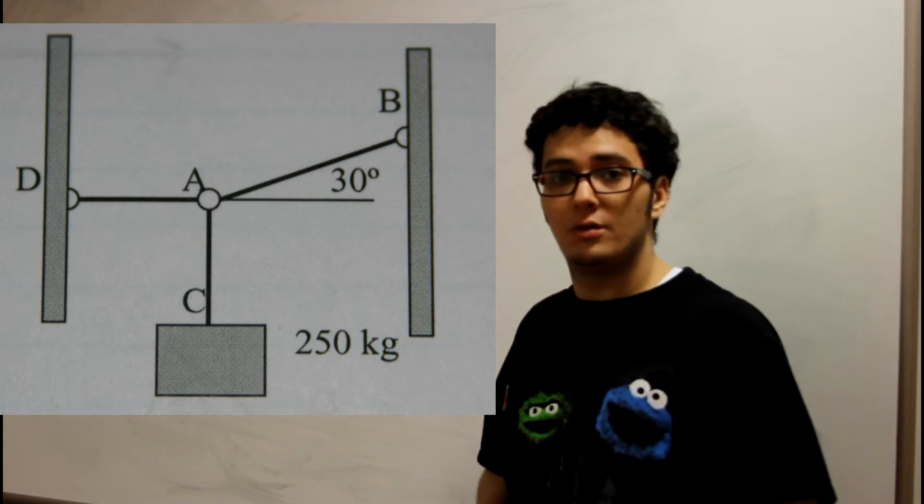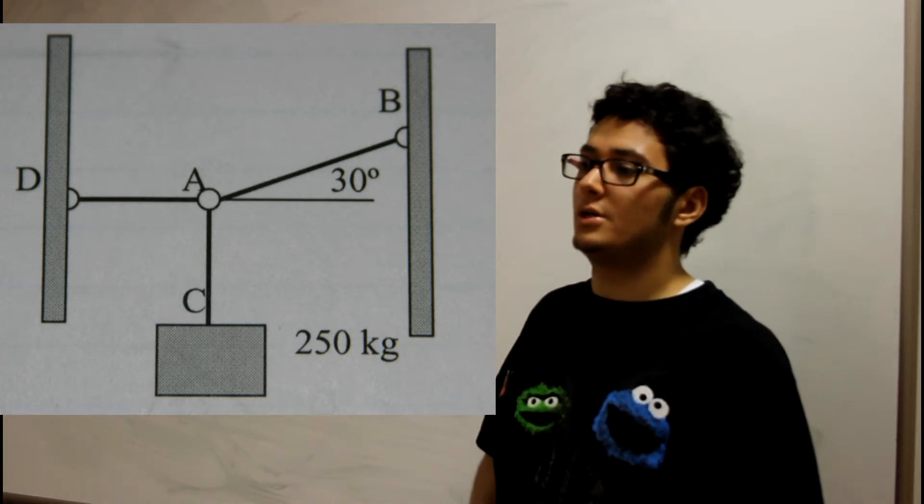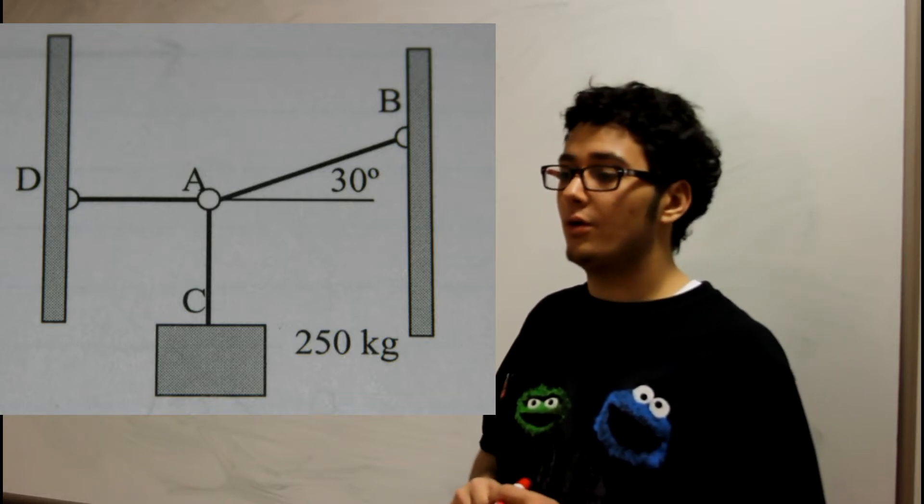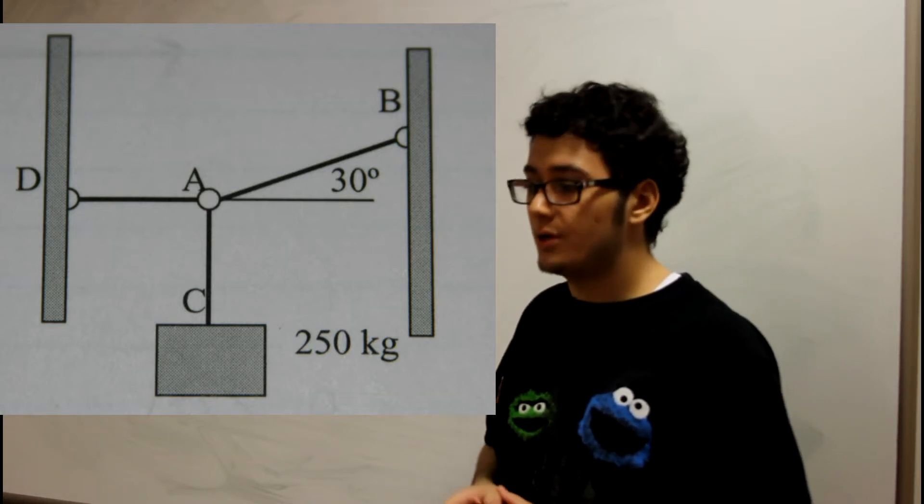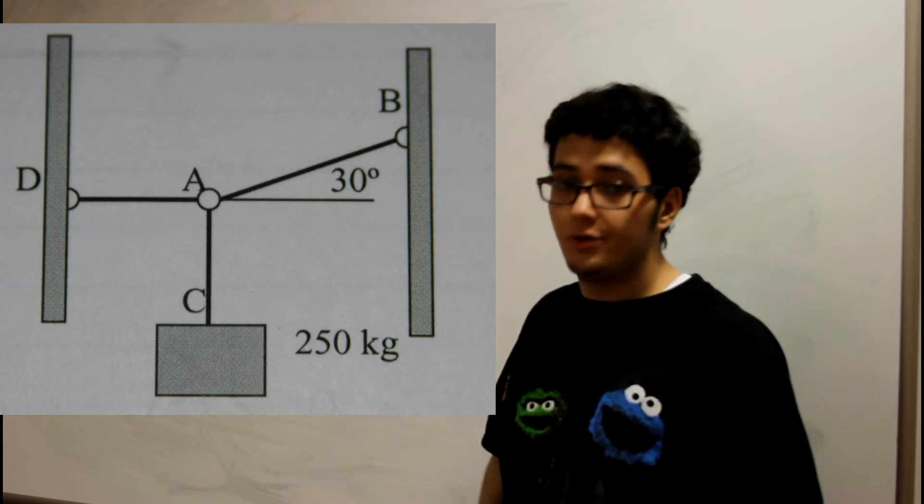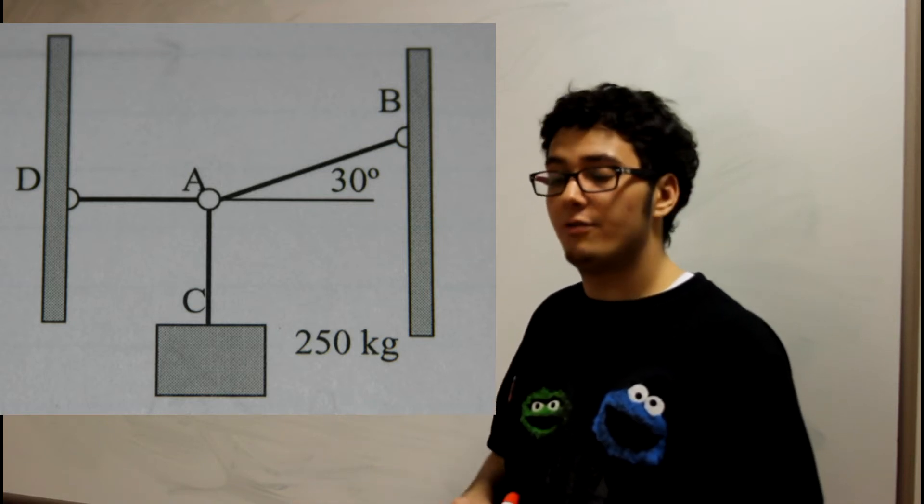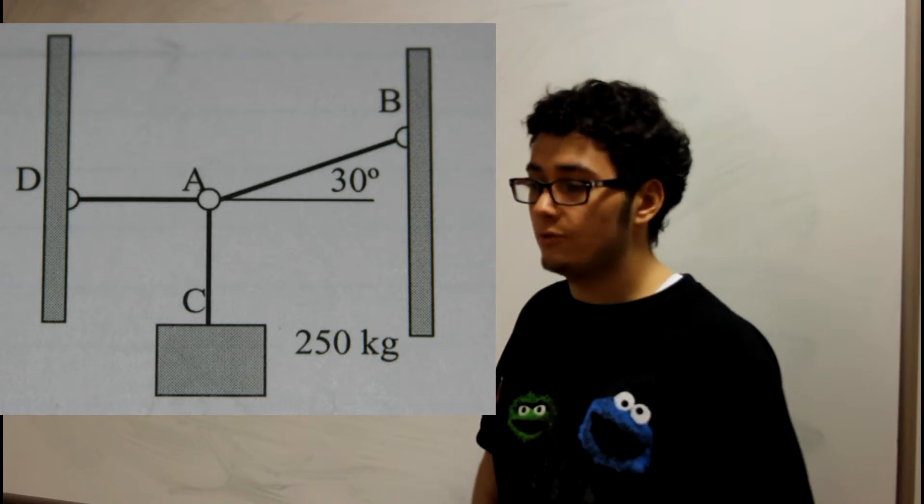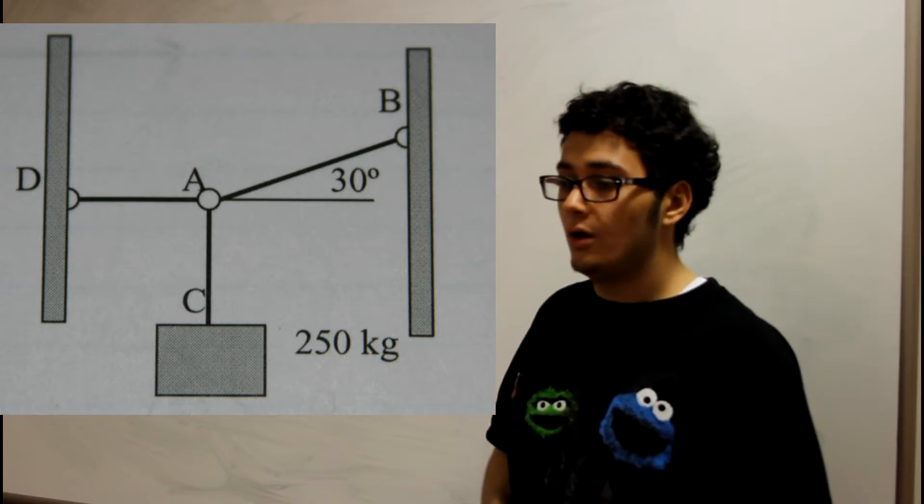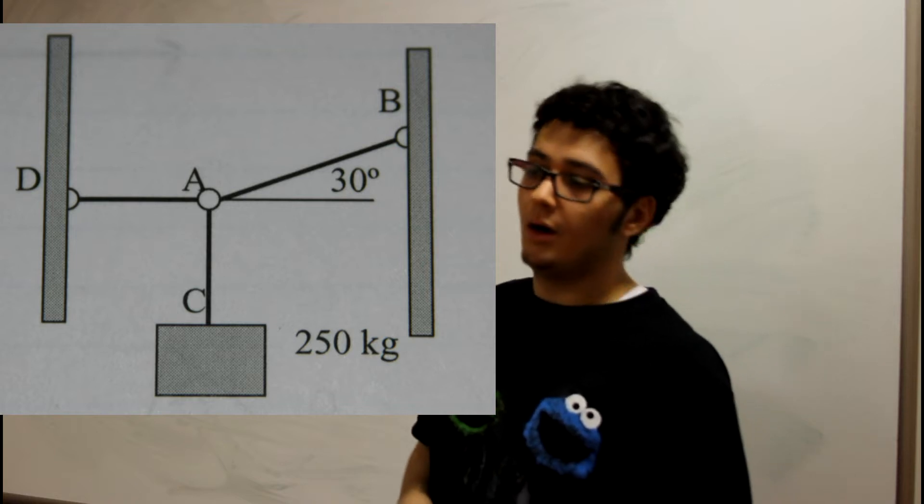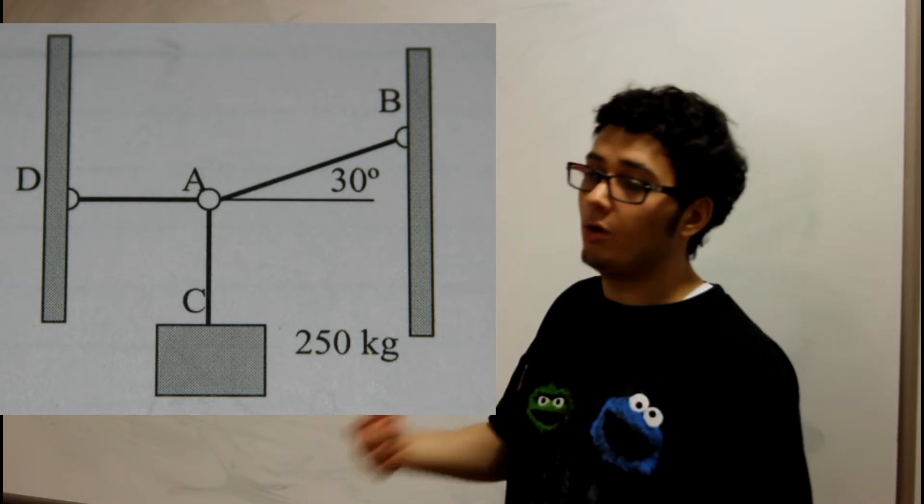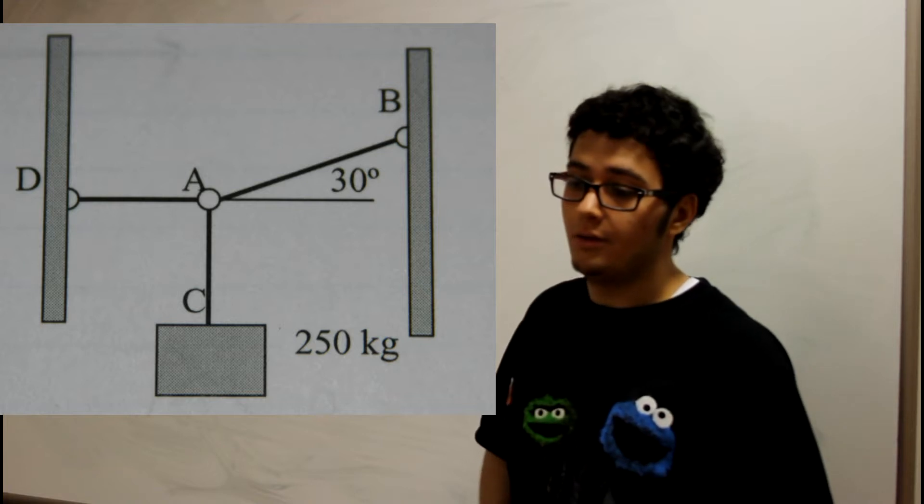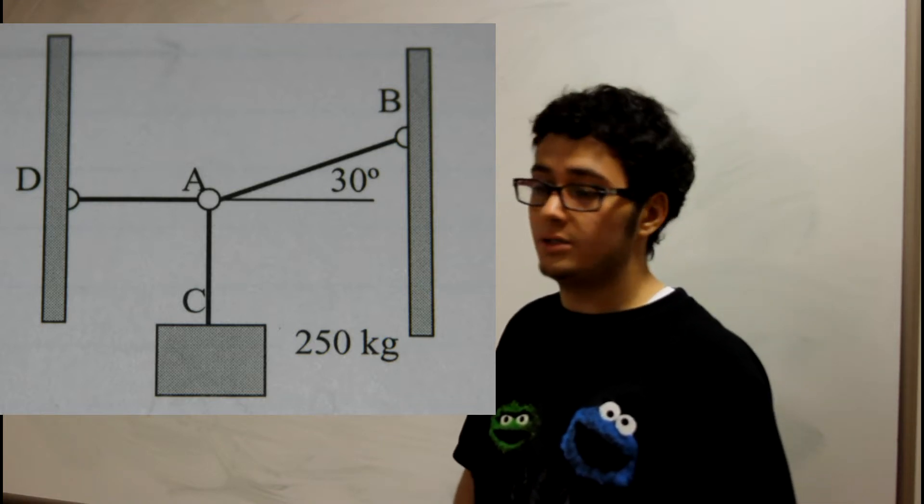The following picture is a problem that we are going to work on. As we can see in the picture, we have three ropes, which means we have three forces. The question wants us to find the tension in rope AD, and the tension in ropes AB and AC as well.